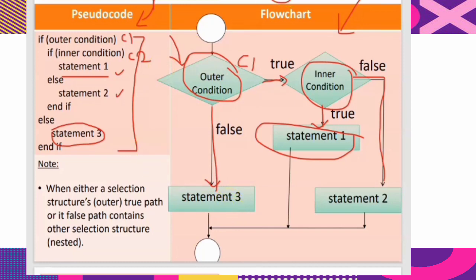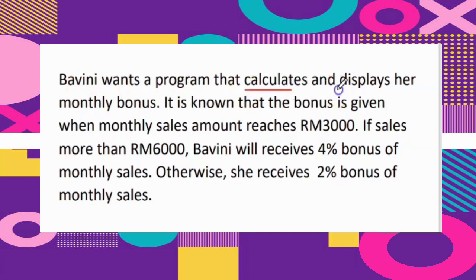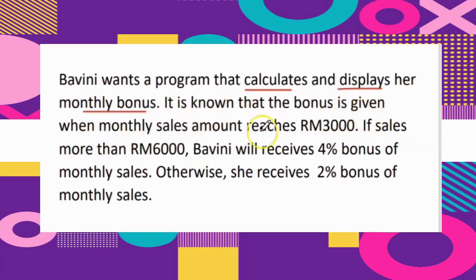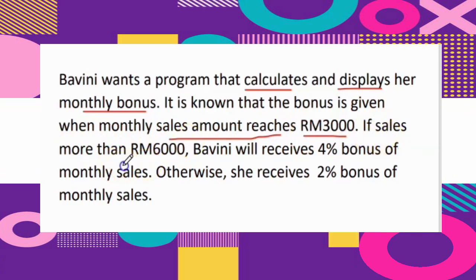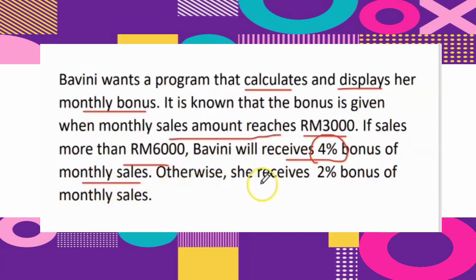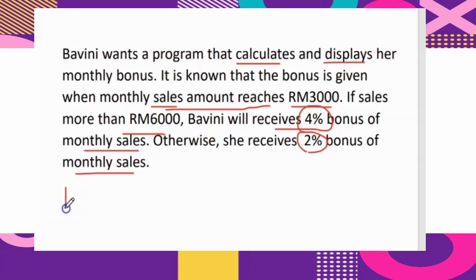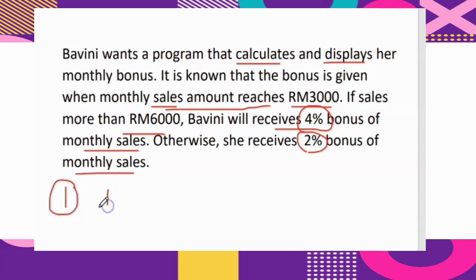This covers the nested IF-ELSE statement. Here is the first example for nested IF-ELSE: Barwini wants a program that calculates and displays a monthly bonus. The bonus is given when monthly sales reach 3,000 ringgit. If sales are more than 6,000 ringgit, Barwini will receive a 4% bonus of monthly sales; otherwise she receives a 2% bonus. The first step is to identify the IPO.